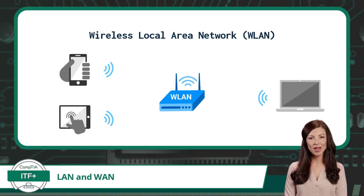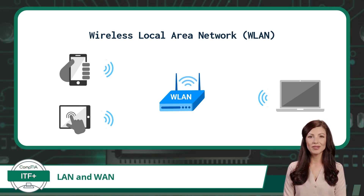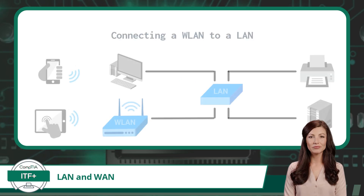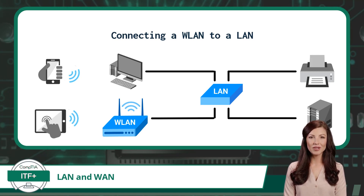In addition to LAN networks, we have WLAN networks. WLAN stands for wireless local area network. A WLAN is similar to a LAN, but the key difference is the use of wireless technology for connectivity. Instead of relying on physical cables, WLANs use wireless signals such as Wi-Fi to connect devices within a localized area. A WLAN may also be connected to a LAN, extending it by providing a method for wireless devices to connect to and share resources with the wired LAN network.